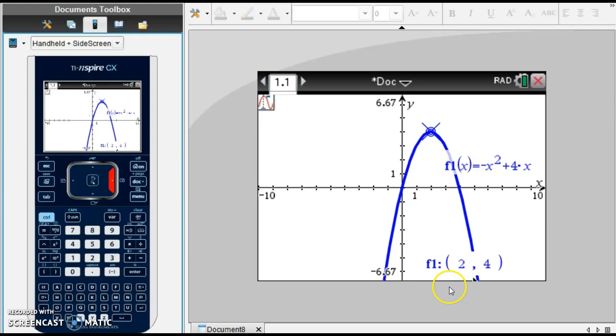The axis of symmetry is the vertical line that goes through this vertex. My x value is a 2. So the axis of symmetry for this parabola is x equals 2.